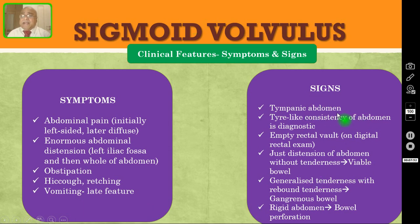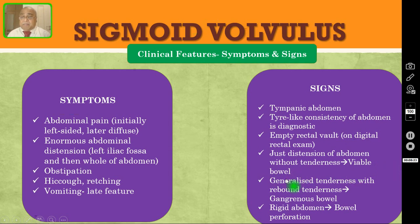Coming to the signs: if you percuss the abdomen, the patient will have a tympanic note. Tire-like consistency of the abdomen is very diagnostic — enormous dilatation of the abdomen that is tire-like. If you do a digital rectal exam, you can feel the empty rectal vault. If the abdomen is just distended without tenderness, this is because the underlying bowel is still viable. If the patient has generalized tenderness with rebound tenderness, the bowel is already gangrenous. Apart from generalized tenderness and rebound tenderness, if the patient also has a rigid abdomen, probably the gangrenous bowel has perforated already and the patient has gone for peritonitis.